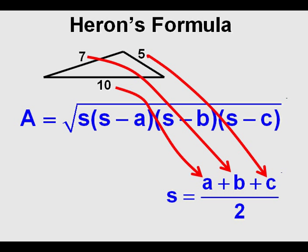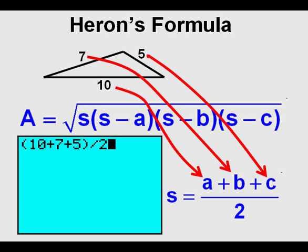The first thing we have to do is find S. We substitute 10 for A, 7 for B, and 5 for C. That would give us 10 plus 7 plus 5, all over 2, and that gives us 22 over 2, or 11 for S.